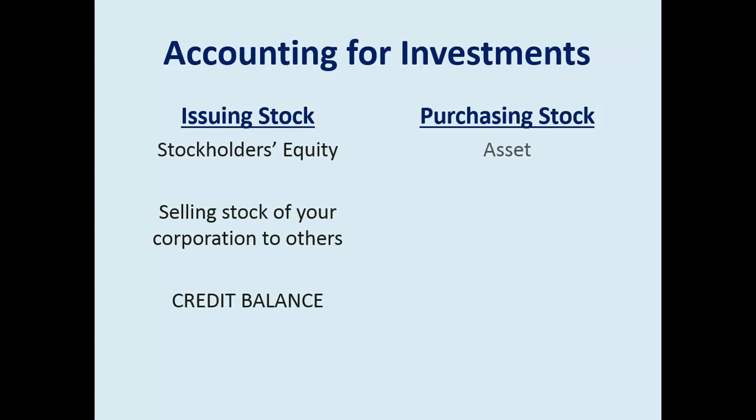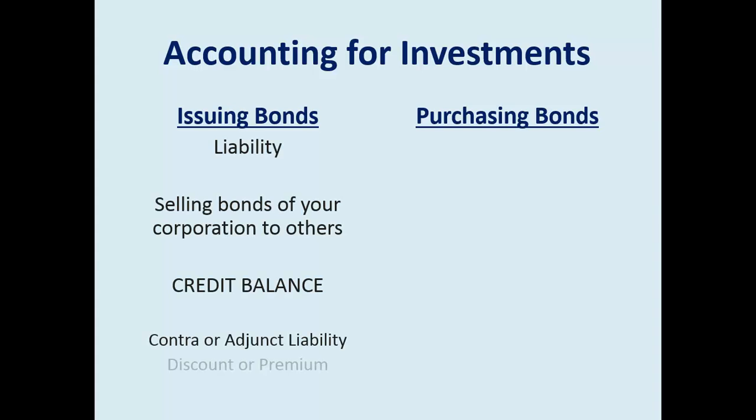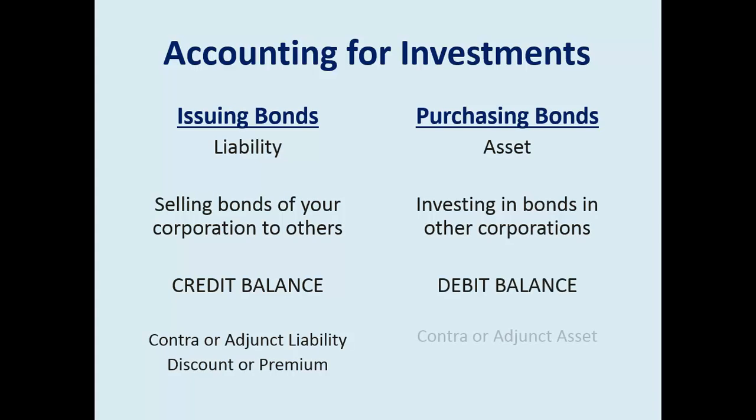In a review of the difference between the issuer and the purchaser — the investor and the investee — with bonds it's a liability or an asset. If you invest in bonds, you could buy at a price less or more than the face value, so you'll be dealing with amortization of a contra or adjunct asset. On the issuer's side, that discount or premium is amortized through interest expense. On the purchaser's side, when using the fair value method, it's amortized through revenue.